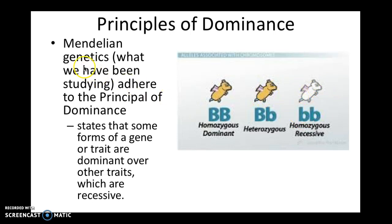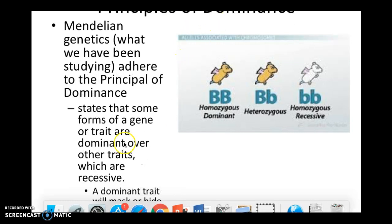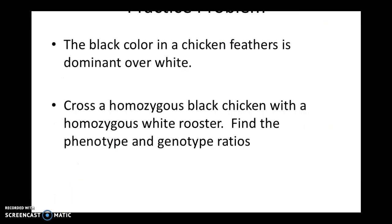Everything that we've done so far with Punnett squares has been Mendelian genetics, but I'm going to throw a wrench into the mix. A dominant trait will mask or hide a recessive trait. So here's a practice problem: if I have a homozygous black chicken and a homozygous white rooster, tell me about their babies, given that black color is dominant over white. Pause the video, try it yourself, and pick a good letter for your allele.